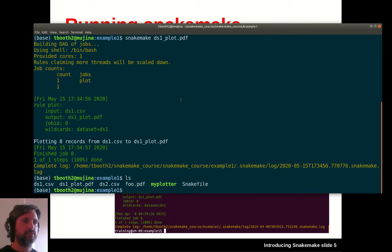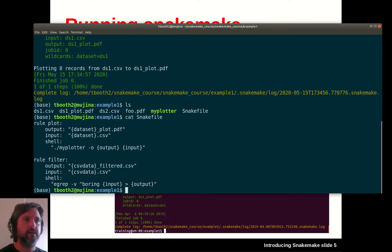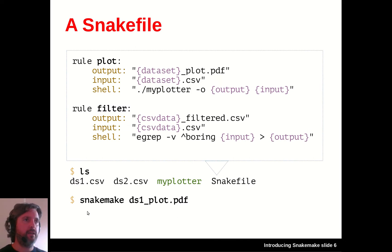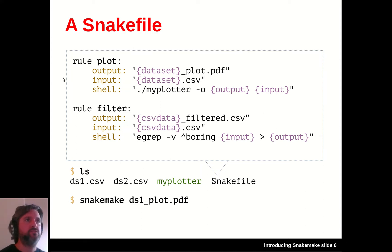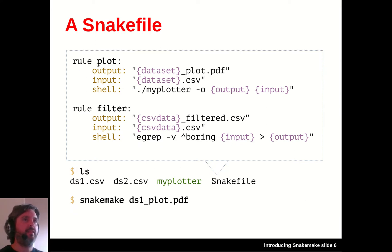How did Snakemake know what command to run? The answer is in the snake file. It contains 8 lines and defines two Snakemake rules. If you're familiar with Python, the syntax will look a little familiar — things with colons and indented text. Two lines define the two rules, named 'plot' and 'filter'. After the 'rule' keyword is the rule name, then a colon, and then the output, input, and command that the rule will run are declared on separate indented lines.